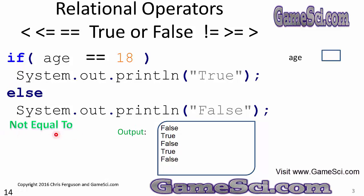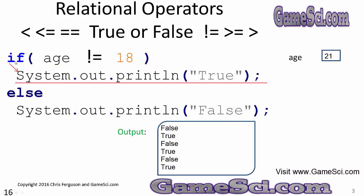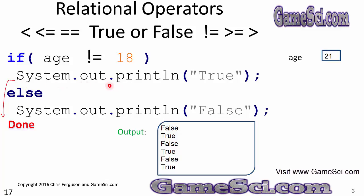Let's look at the not-equal operator — the last relational operator we'll be looking at. I'm going through all six relational operators to show you how they behave and how they affect the if-else statement. Age now has the value 21 in it, so 21 not equal to 18 is very much a true statement. The left operand is not equal to the right operand, so it returns true. As a true statement, it executes the if portion of the code and true shows up on the output. It will only select one piece of code to execute: if it does the if portion, it will skip the else.